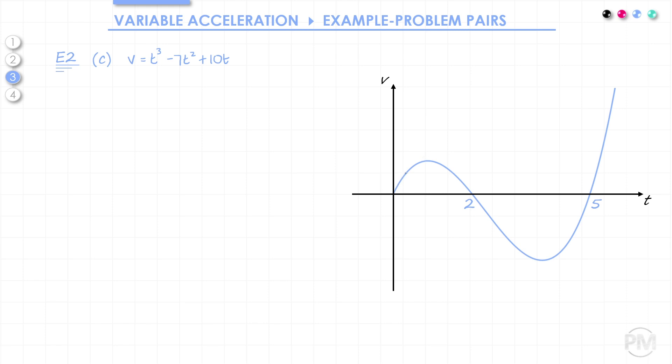To help understand that, let's consider the trajectory the particle follows. First of all, between 0 and 2, it's travelling in one direction. Then between 2 and 5, it's travelling in the opposite direction. So when we're considering the distance travelled, if we just did one big integral, we would find that the area above the x-axis would cancel out with some of the area below the x-axis.